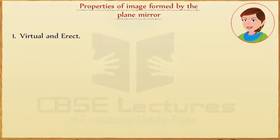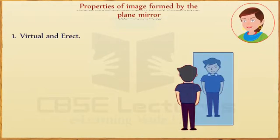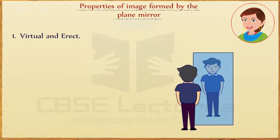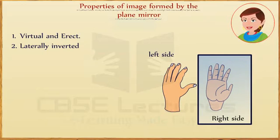Properties of image formed by the plane mirror. The image formed by the plane mirror is: first, virtual and erect — that is, it cannot be taken on a screen. Second, laterally inverted — meaning the left side of the image seems to be right and the right side of the image seems to be left.